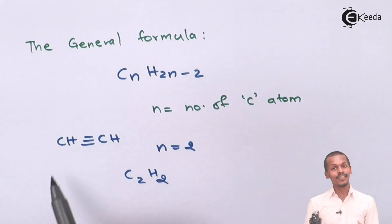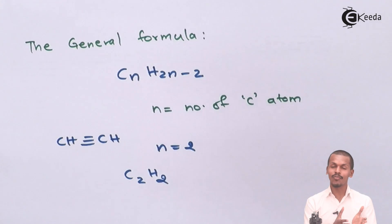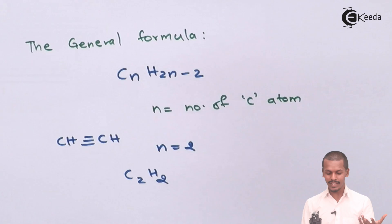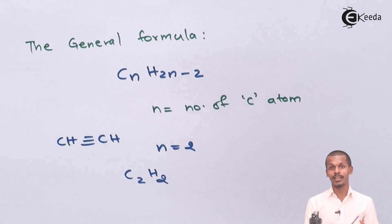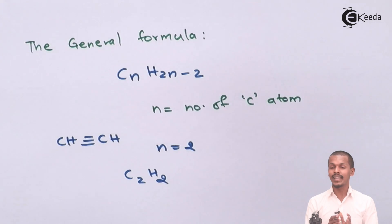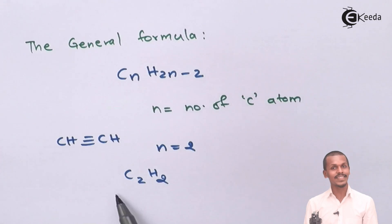So if a hydrocarbon consists of two carbon atoms and follows the general formula CₙH₂ₙ₋₂, then it would be called an alkyne. Therefore, even if we write the structural formula and see that a carbon-carbon triple bond is present, we know it is an alkyne. And even if we have a molecular formula like C₂H₂ that fits the general formula CₙH₂ₙ₋₂, that would also be called an alkyne.